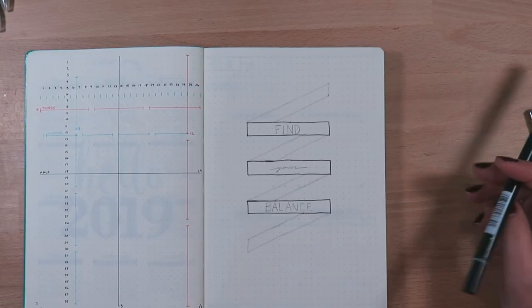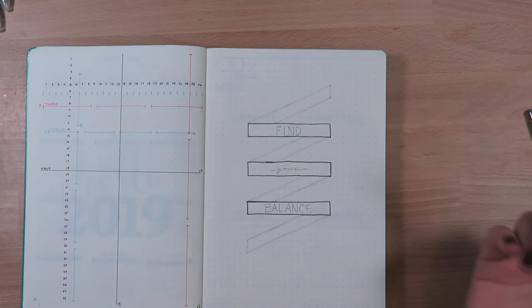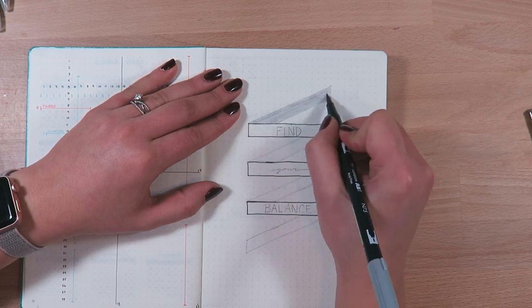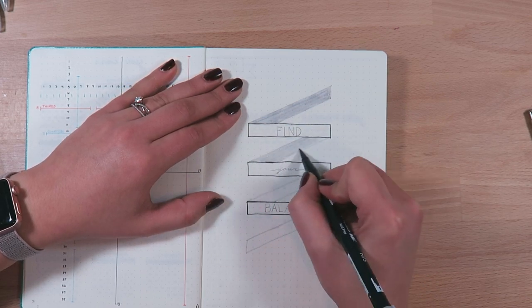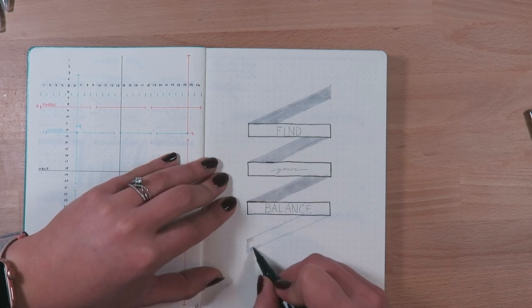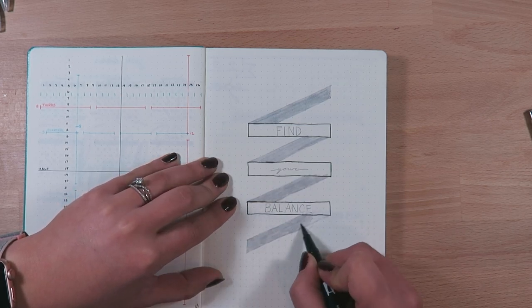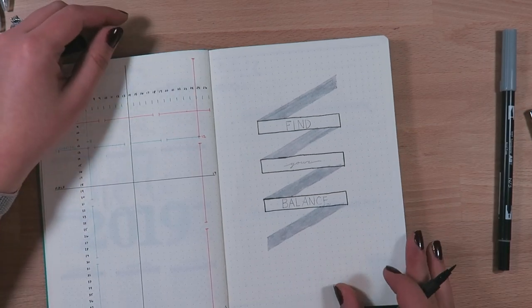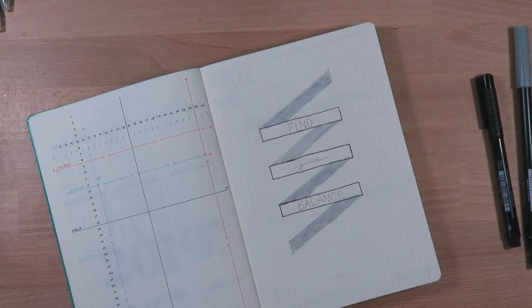That eraser that I use is a Staedtler Mars plastic eraser and I love this thing. It's a lifesaver because I do go through erasers like crazy and I have mechanical pencils with erasers on them that you can't replace.